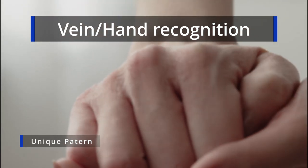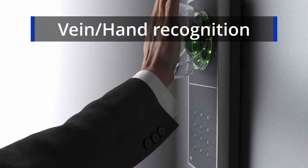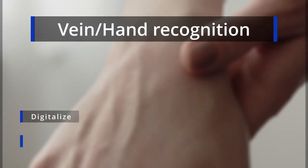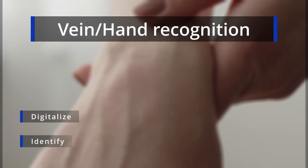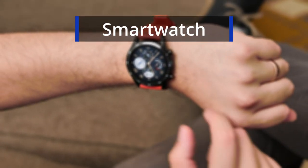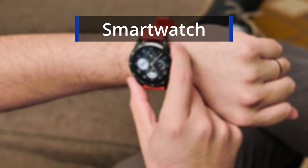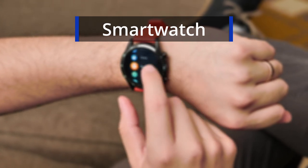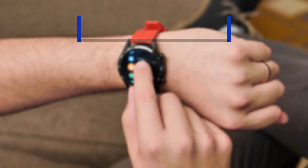Infrared light passes through the surface where it is absorbed into deoxygenated blood. A special camera is needed to capture the footage, which digitalizes the data and either stores it or uses it to identify. One easy example is the smartwatch, which uses a green infrared light to see your heart rate by detecting the thickness of your vein.